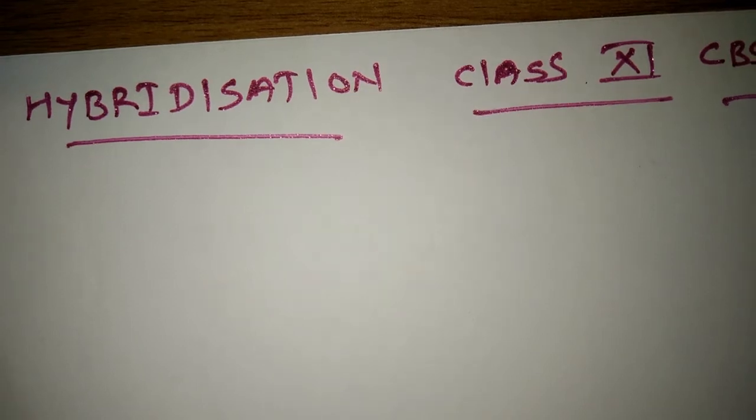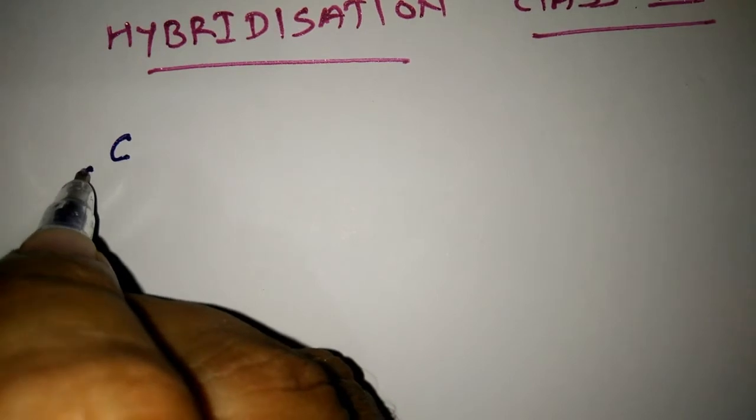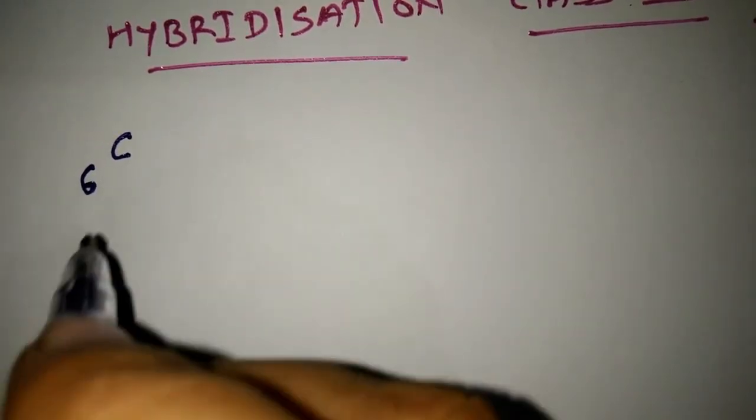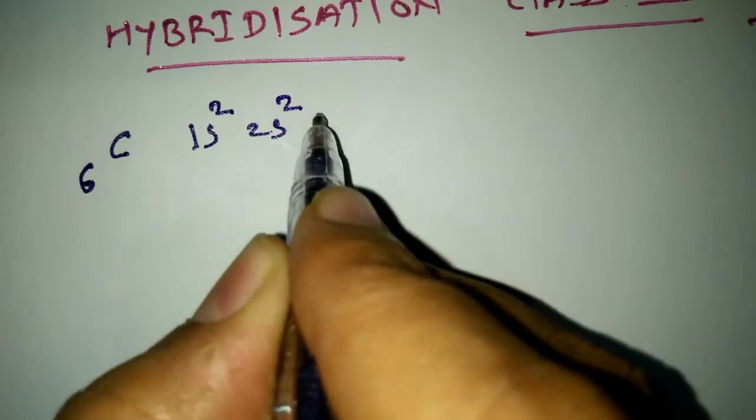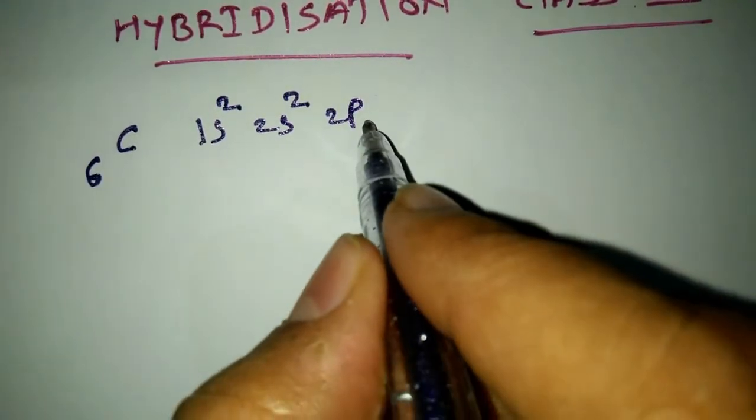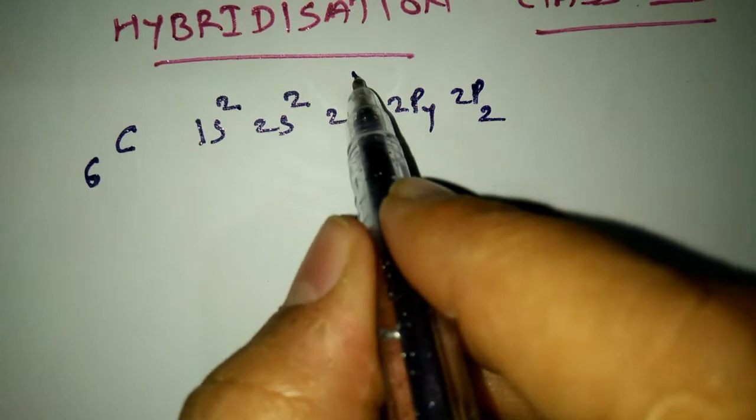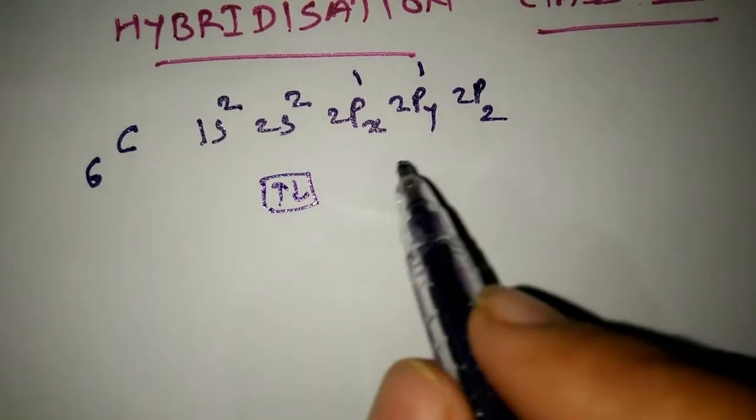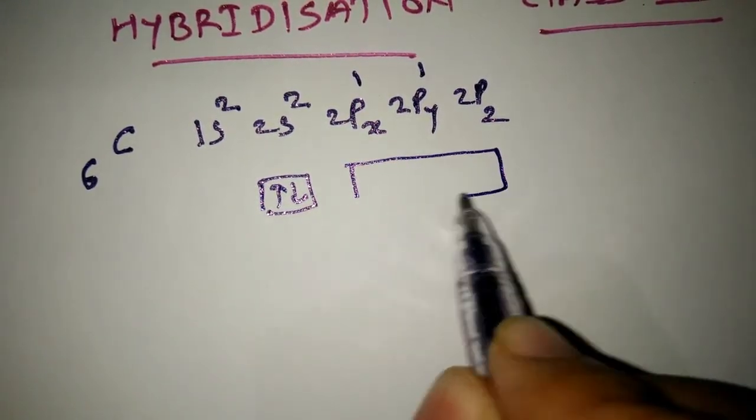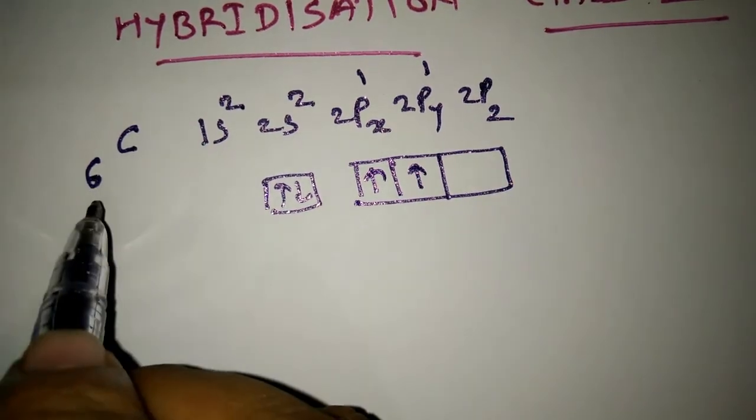Carbon atomic number 6. Electronic configuration: 1s2, 2s2, 2px1, 2py1, 2pz0 in its ground state.